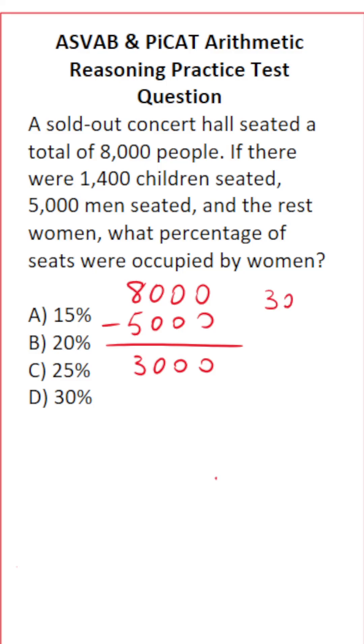And then from the remaining 3,000 people, we're going to subtract the 1,400 of them who are children. 0 minus 0 is 0, 0 minus 0 is 0. 0 minus 4 we can't do, so we have to borrow. This becomes 2, this becomes 10. 10 minus 4 is 6, 2 minus 1 is 1.